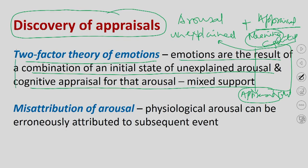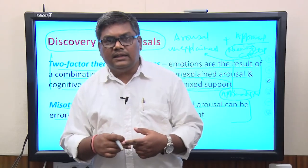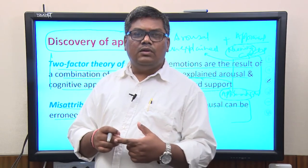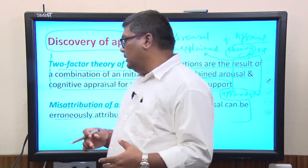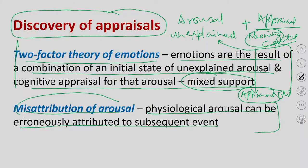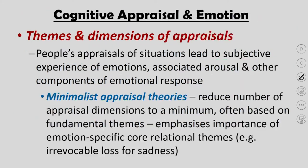One of the primary reasons for different emotion generation is different appraisals. This is called misattribution of arousal: physiological arousals can be erroneously attributed to subsequent events. In both the epinephrine and exercise experiments, people erroneously attributed the reason for their arousal to either the happy or sad room, or to the words spoken to them.